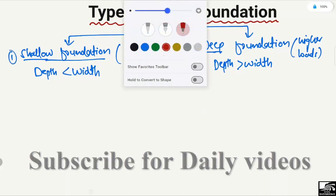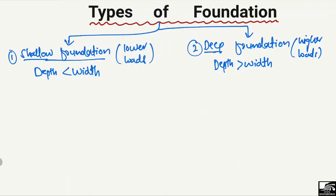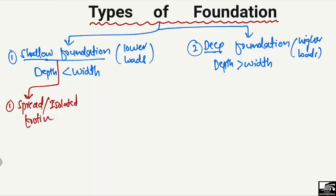The shallow foundation can be further categorized into four main types of footings. The first type is the spread footing, also known as the isolated footing. This type of footing is provided only to a single column — for example, a reinforced concrete column. The footing provided to this single column, to resist and take the load of that column, is known as the spread or isolated footing.